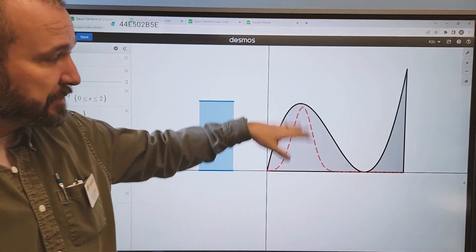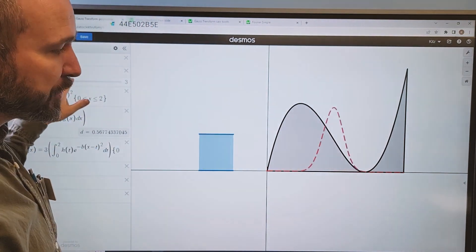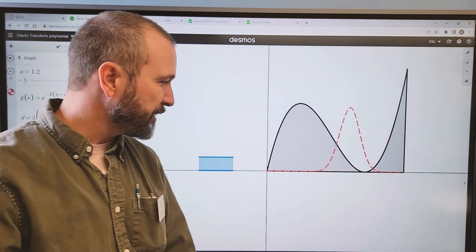then I should get a big total mass because I'm making the large parts of the metal plate heavy. And if I slide the curve over here, then I should get a small total mass because I'm making the small parts of the plate heavy.